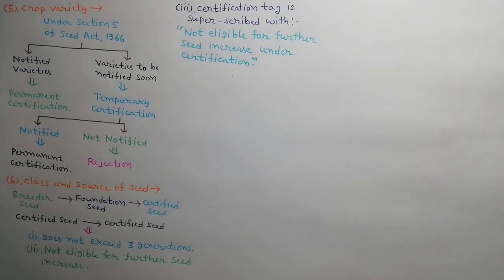Breeder seed is the source of foundation seed, and foundation seed is the source of certified seed. Certified seed may be the progeny of certified seed, provided this reproduction does not exceed three generations beyond foundation seed stage, and it is determined by the certification agency that the identity and genetic purity will not be significantly altered.